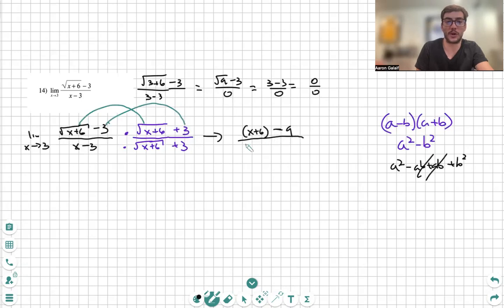And then, on the denominator, we're going to write them out just as it is. Do not combine them because, or FOIL, because it'll just get weird. We're going to simplify the numerator a little bit. 6 minus 9 is x minus 3. And what do you see?